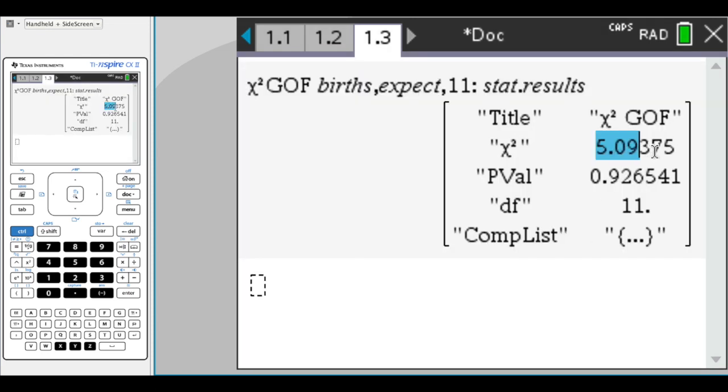We get the same chi-squared statistic that we calculated from our spreadsheet, a p-value of 0.9265, and a degrees of freedom of 11. Last thing that's super important that you'll need to see is this last bit is your contribution list, or your component list as the TI Inspire calls it. And it says dot dot dot, so you're not able to see this.